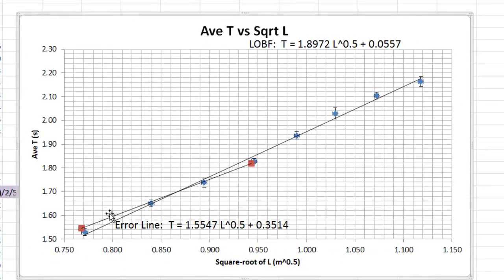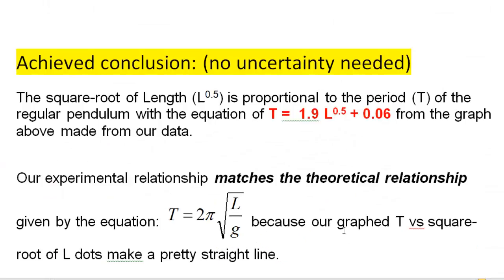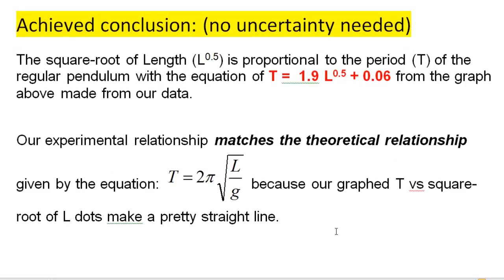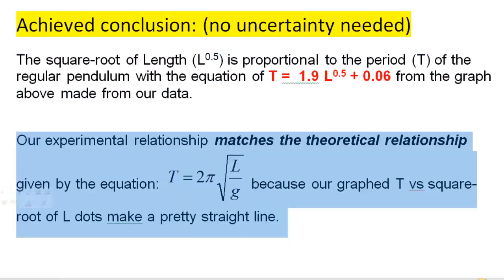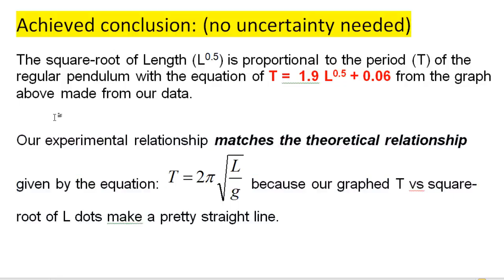Now how to compare it. You need another statement. Here is one of many ways of doing it. You can say our experimental relationship matches the theoretical relationship given by this equation, because you graphed T versus the square root of L, and your dots were a nice, happy, straight line. If your dots were not in a straight line, you would not have a square root relationship. And if that happens, you better talk about that, or better fix it. Otherwise, no matter how you write it up, you're probably not going to pass. So that's your achievement level conclusion, right there. That's all you need to say. Most kids do the top part, they forget to do the bottom part, and they cannot pass. So be very, very clear on the two parts of this achieved level conclusion.